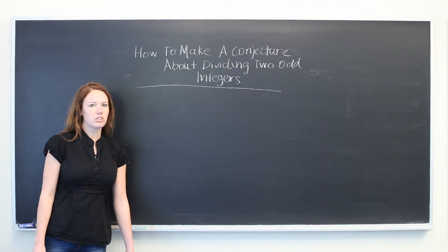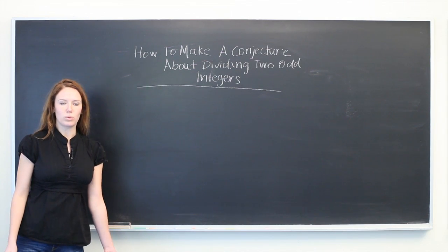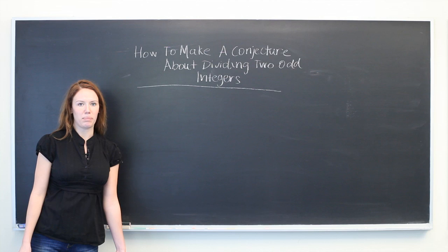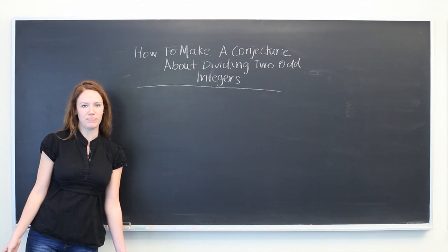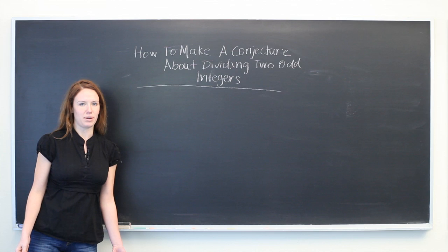A conjecture is just a mathematical statement or rule that is thought to be true but can't be disproven, and at the same time you can't call it a fact or a theorem.